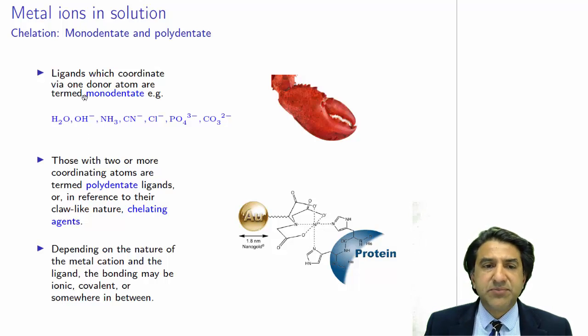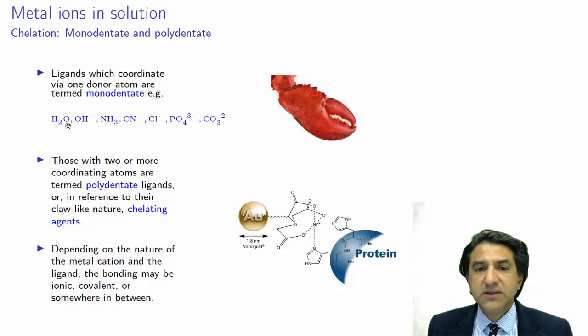So ligands can be monodentate, which means like water, it can donate one pair of electrons. OH⁻, NH₃ has got a lone pair on the top. All of these molecules are monodentate ligands, but there are molecules which can donate more than one pair of electrons onto the metal, and they're called polydentate.